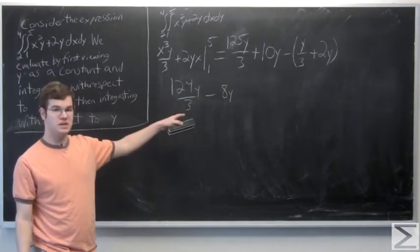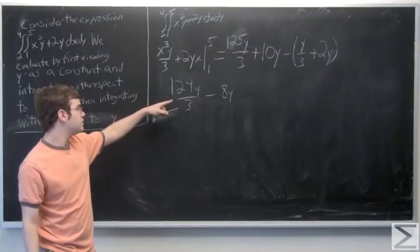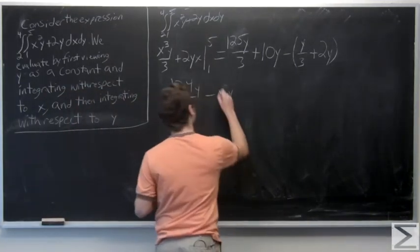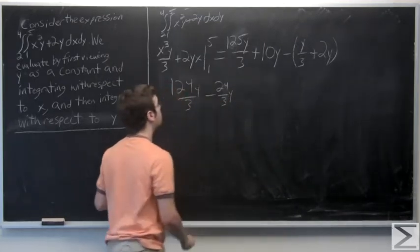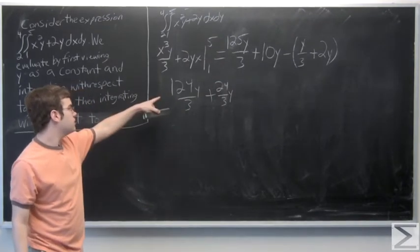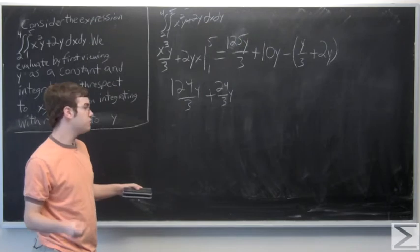8y is just another way of saying 24y over 3. So now we'll have common denominators between these two. This should be plus. And so 124 plus 24 is equal to 148.